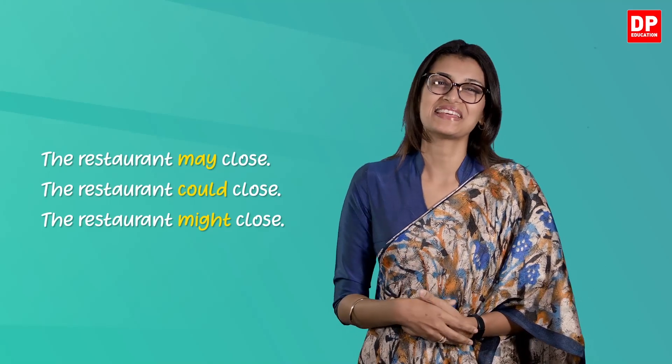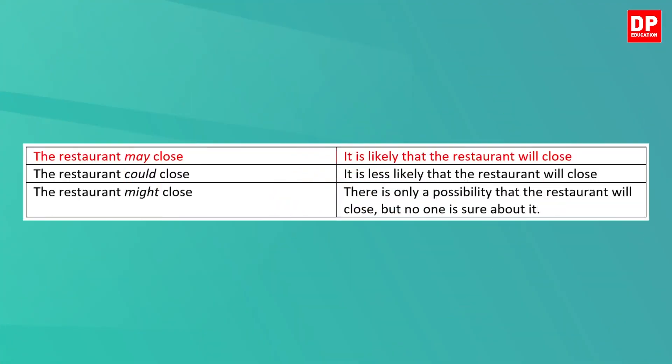Let's look at this table. The restaurant may close — it is likely that the restaurant will close. The restaurant could close — it is less likely that the restaurant will close. The restaurant might close — there is only a possibility that the restaurant will close but no one is sure about it. Through these three modal verbs you can show your listener or reader the degree of certainty or uncertainty.